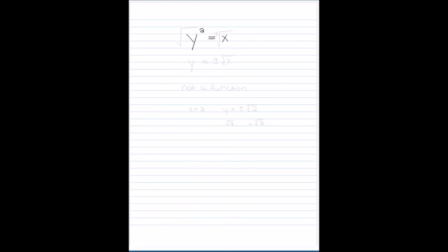Let's say I have Y squared is equal to X. Now if I try to isolate the Y, what I'm going to do is take the square root of both sides. When I do the square root of X, I have to put a plus or minus there. The square root of Y squared is just Y, and then I have plus or minus the square root of X. Now this is not a function, because if I plug in an X value, it's going to give me two different Y values. So if I plug in X equals 2, then I get Y is equal to plus or minus the square root of 2, which gives me two Y values: square root of 2 and negative square root of 2. Because it gives you two values, it's not a function.